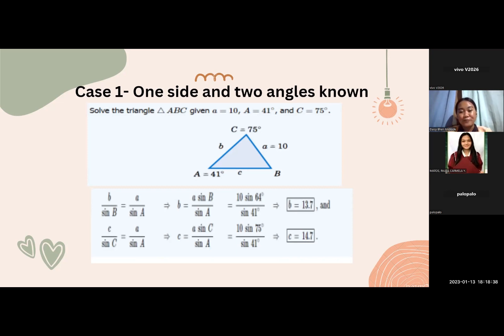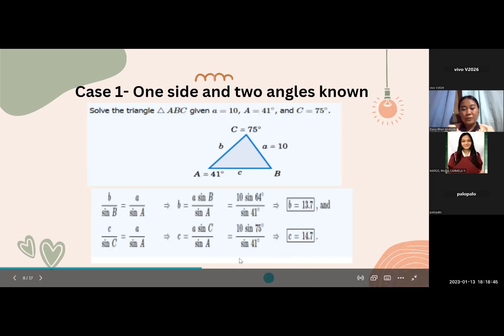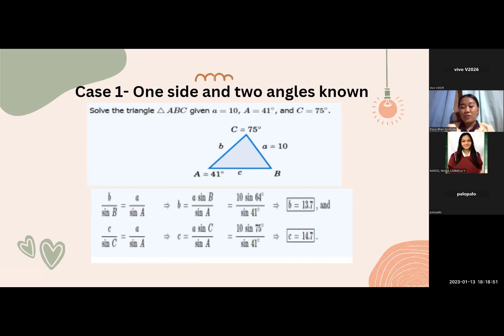So, in finding the missing angle, we will be using this formula. So, sine B over b is equal to sine A over a. Then, b is equal to a times sine B over sine A where you substitute the value of a which is 10 and sine.